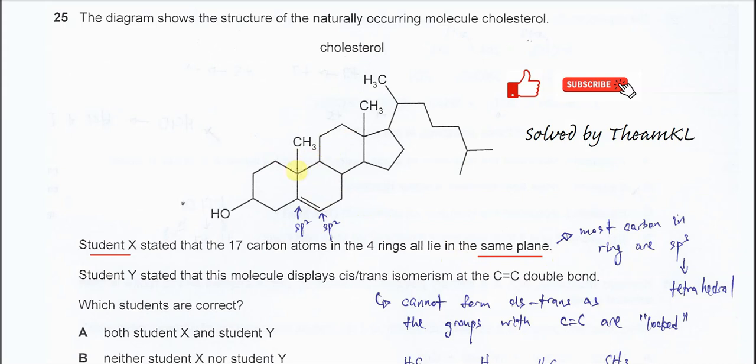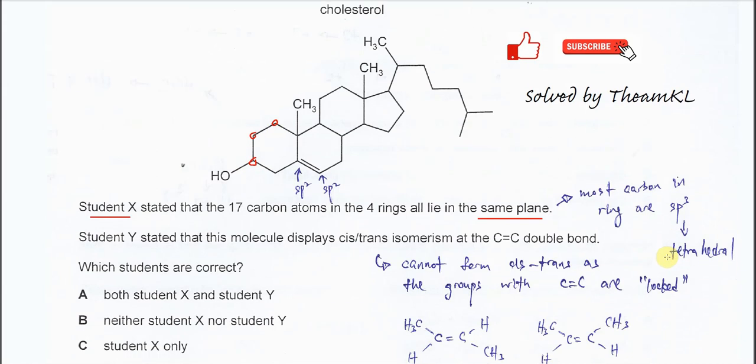So you have to understand, many of these carbons, they are sp3 carbons. Sp3 carbon, you should know that its geometry is tetrahedral. So when it's a tetrahedral geometry, how can the carbons be in the same plane?